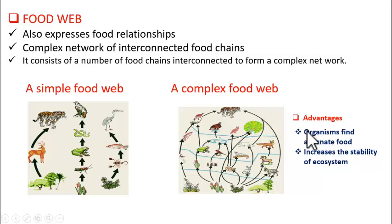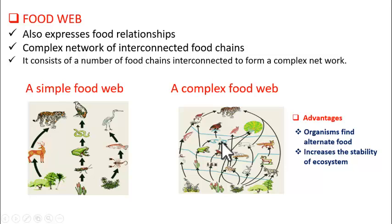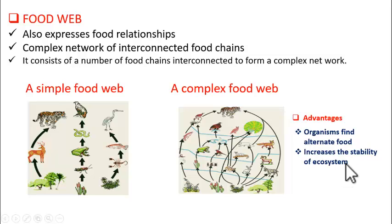What are the advantages of food webs? Food webs actually provide alternate food for the organisms. If frogs are eliminated from nature for some reason, then the predator of frog — that is snake — would normally have to die off. But it does not happen because the snake can eat alternate foods like rats or birds. So organisms can find alternate foods if there are food webs, and this leads to the stability of the ecosystem. This is the reason why food webs are developed in nature.